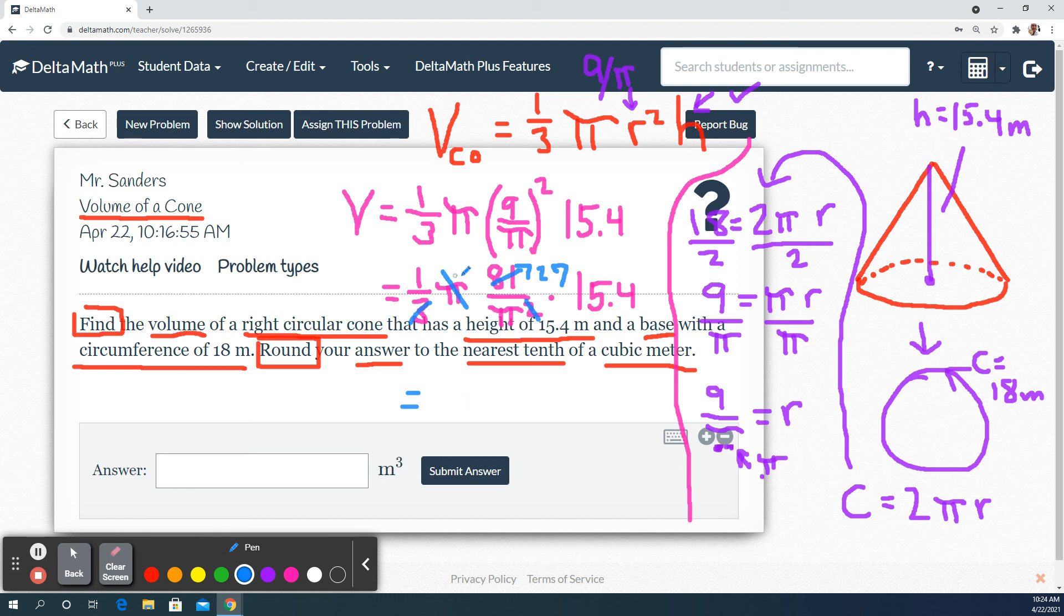So I now have on the top a 27 on the bottom a pi. And this is still times 15.4. A number times a fraction goes to the top. Remember, this is just like over one and we multiply straight across. So 15.4 times 27, I got 415.8 and we still have on the bottom that pi.